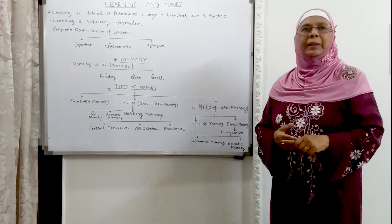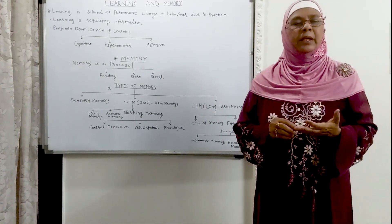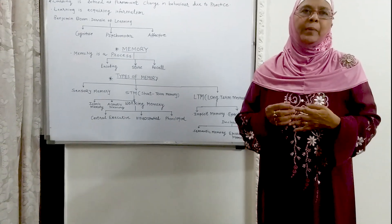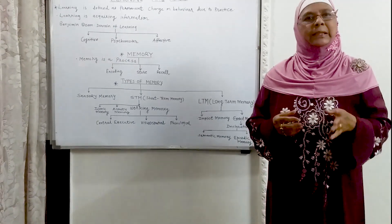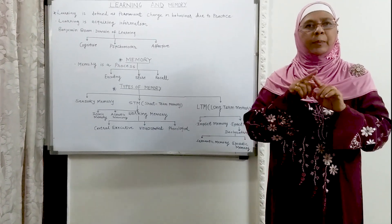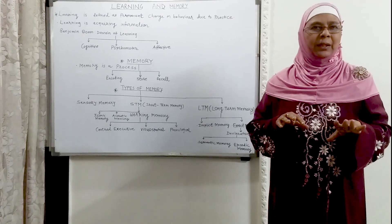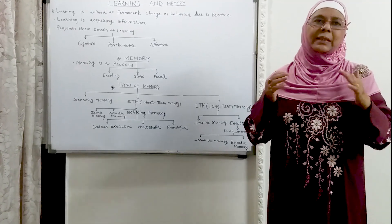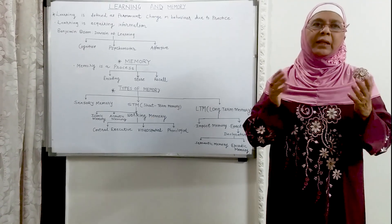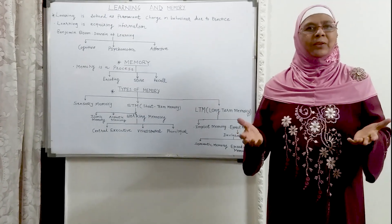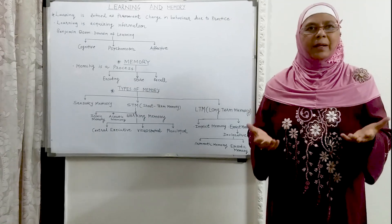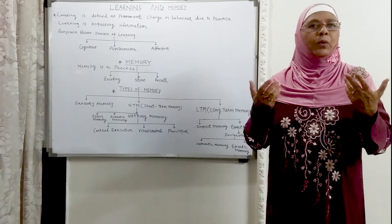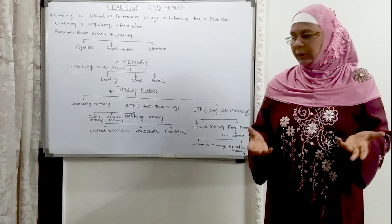Declarative memory is further divided into two. One is semantic memory. Semantic memory gives us information about rules, concepts, and numbers. For example, two multiplied by two is equal to four — that is a concept. Or the plus sign versus a cross. If the plus sign's middle line is raised, it becomes a cross. If that plus sign is in red color, it is a doctor's sign — that is a concept. Concepts, ideas, rules, our own names, area codes, postal code numbers — these are all semantic memory.